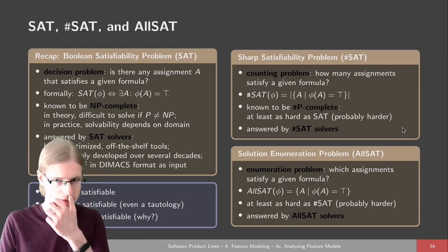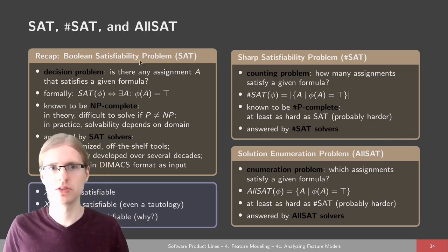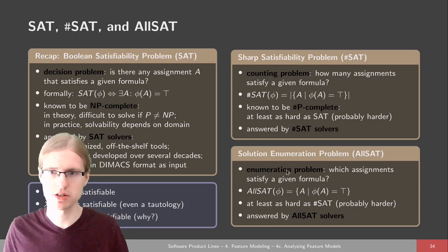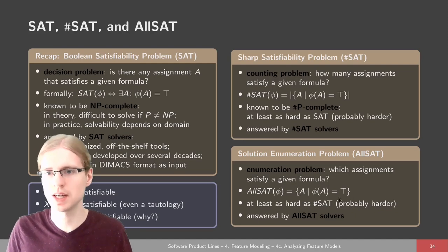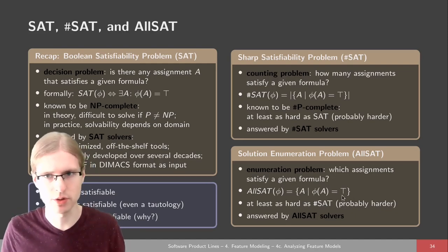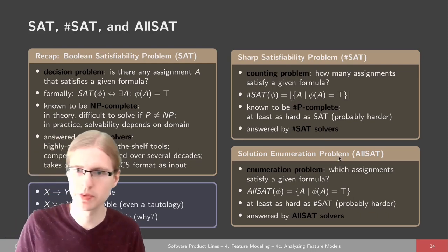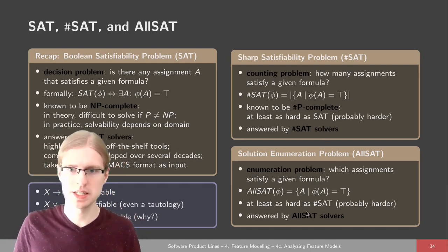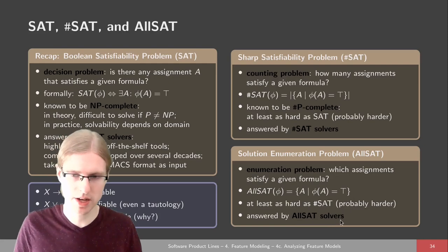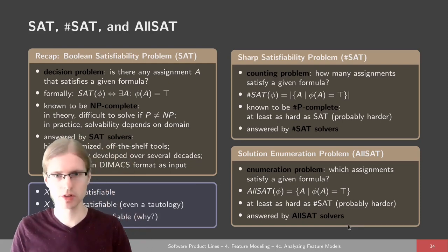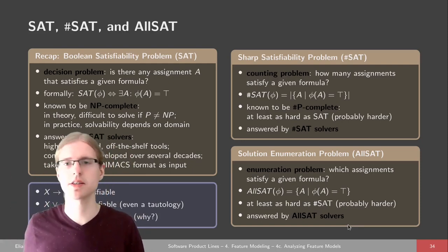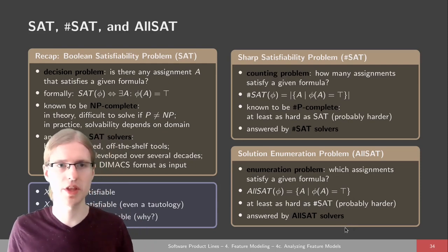We can add another level and ask not for a yes/no answer and not for a count, but for enumeration: which assignments does the given formula actually satisfy? We are not interested in the count, but in the valid configurations themselves. This problem is of course at least as hard as the #SAT problem, probably even harder. It's also answered by its own class of solvers, sometimes called All-SAT solvers. We are going to look at each of these three solver classes and how they work on feature models.